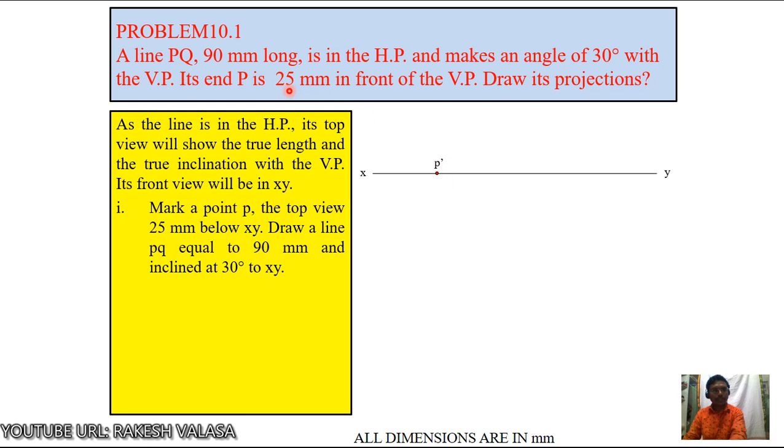You can see this is the front view. Another point, same point. 25mm in front of VP. Draw the vertical line up to 25mm. Locate this top view point. That is P. Now give the dimension of 25mm.